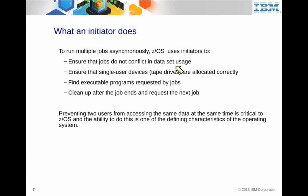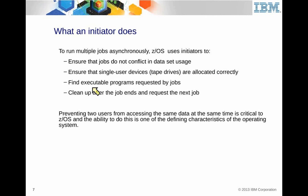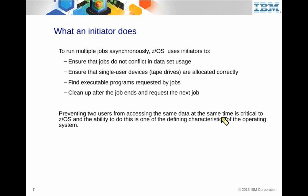Initiators ensure jobs do not conflict in data usage. If you specify DISP=OLD in the JCL, that means you want exclusive use of a dataset — while you're processing it, no one else can access it. It also ensures single-user devices, like tape drives, are allocated correctly. The initiator finds the executable program requested by the job and cleans up at job end. It prevents two users from accessing the same dataset at the same time — that's the DISP=OLD specification.